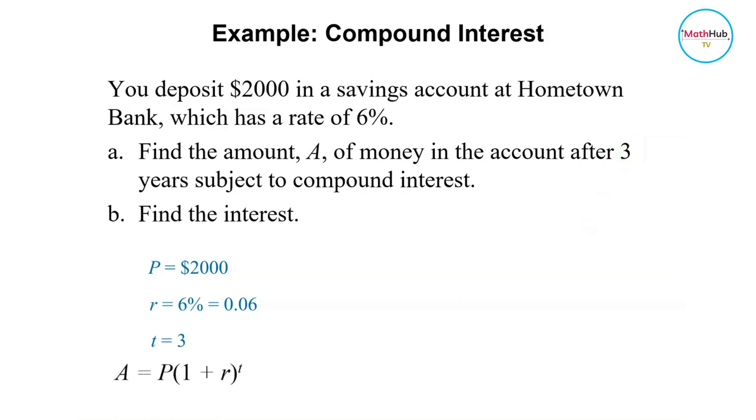Then we substitute this into the compound interest formula, which is given by this formula here. P is 2,000, R is 0.06, and then the time is 3.